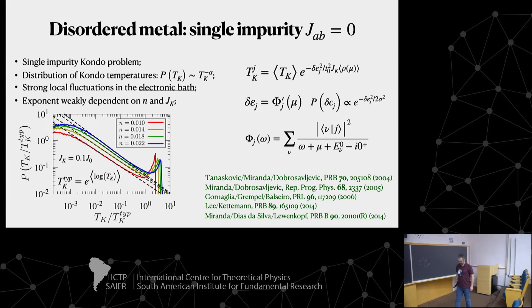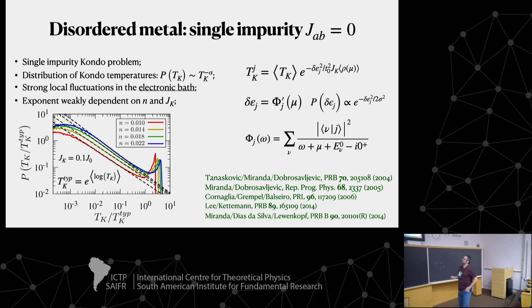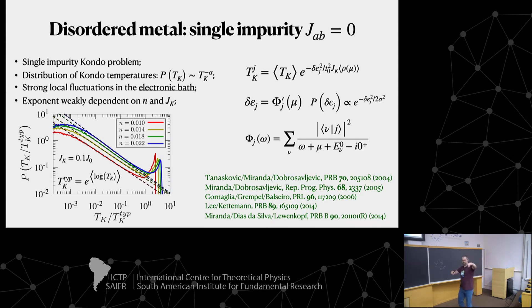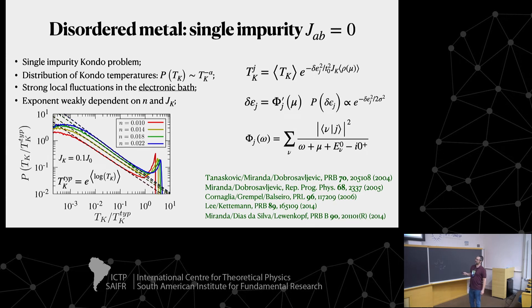Consider first the single-impurity case without coupling between local moments. Because I have a disordered environment, instead of a single Kondo temperature I get a distribution of Kondo temperatures — each impurity placed at a different site sees a different local environment. Remarkably, this distribution is not just any distribution: it's extremely singular, following a power law P(T_K) ~ T_K^α. In a log-log plot you can clearly see this power-law behavior for different values of dopant density.